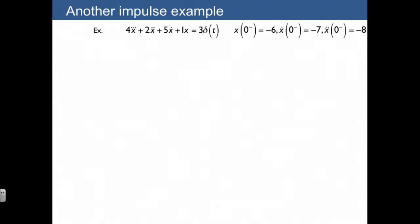When we integrate both sides, what we end up with is 3 times 1 on the right. On the left, we're going to get 4x double dot evaluated between 0 minus and 0 plus, plus a bunch of other terms that I can just get away with ignoring.